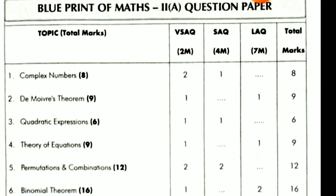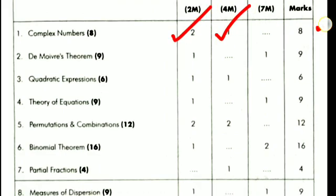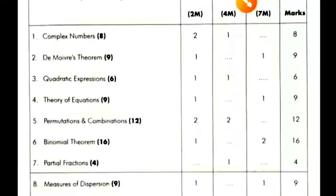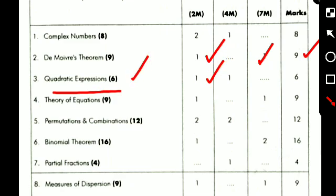The first topic is complex numbers. From complex numbers, the weightage is: very short answers — 2 questions, and short answer — 1 question, total 8 marks. The second topic is De Moivre's theorem. From De Moivre's theorem: one very short answer, one short answer question, total weightage is 8 to 9 marks. The third topic is quadratic expressions, weightage equal to 6 marks — one 2-mark question, one 4-mark question.